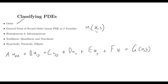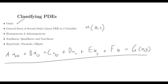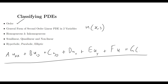Let's now look at what it means for something to be homogeneous or inhomogeneous. In its current form, the general equation is inhomogeneous. If we set the right hand side equal to zero, it becomes homogeneous. A homogeneous equation contains only partial derivatives of the unknown function u or the function u itself. Inhomogeneous means there's some additional function — like g(x,y) — that has no u term.